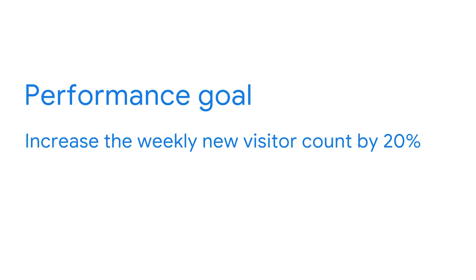For the campaign, you set an initial performance goal of a 20% increase in weekly new visitor counts to match the desired business goal. To determine whether you're meeting your performance goal, you monitor the metrics for new visitors to the site and compare them to the previous baseline numbers. Once you reach a 20% increase, you've met your performance goal.